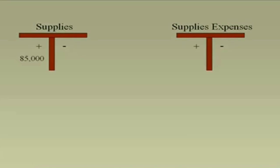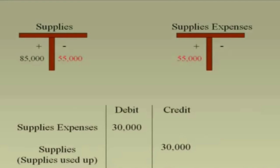Previously you had $85,000 in your supplies; now you want the balance to be $30,000, because $55,000 has left the warehouse — it got used up. When an asset gets used up, it gets converted to an expense. So you transfer $55,000 from supplies, an asset account, and an expense has increased: supplies expense. The journal entry is: debit supplies expense, credit supplies — both $55,000.